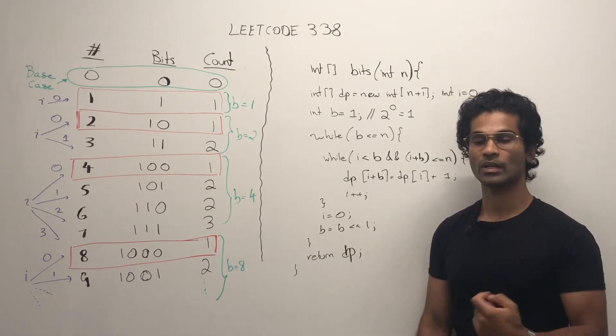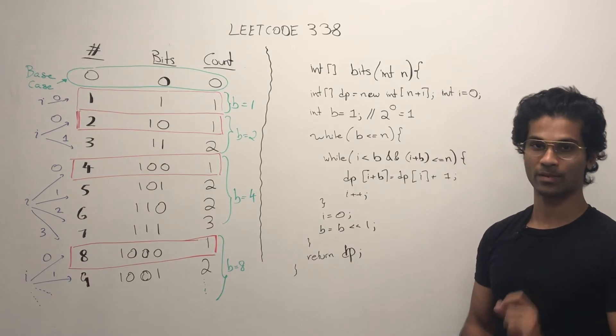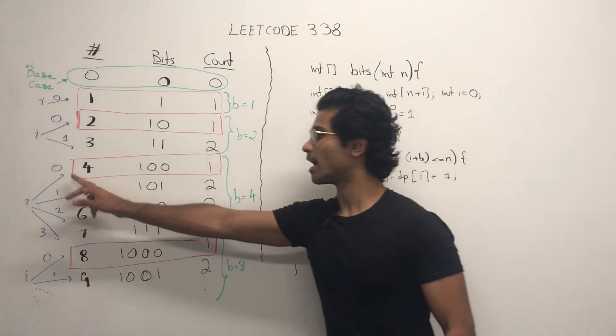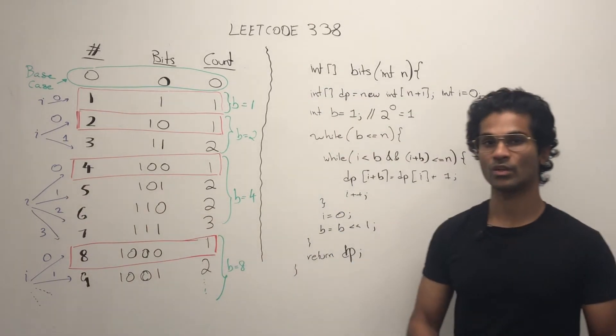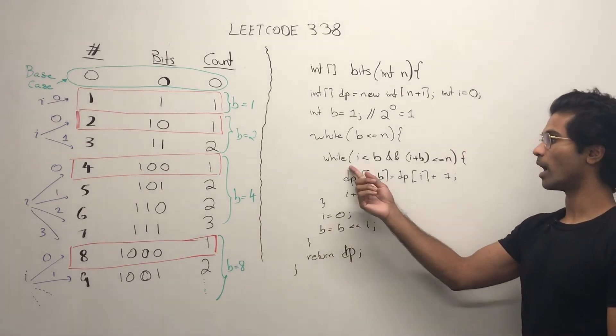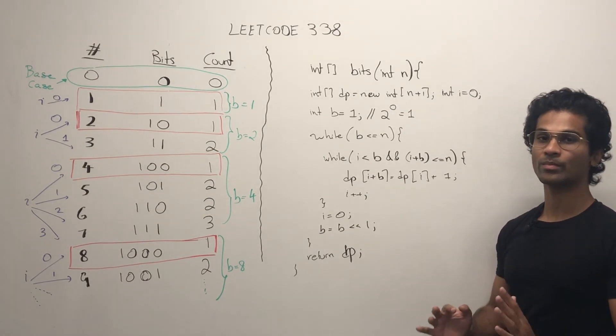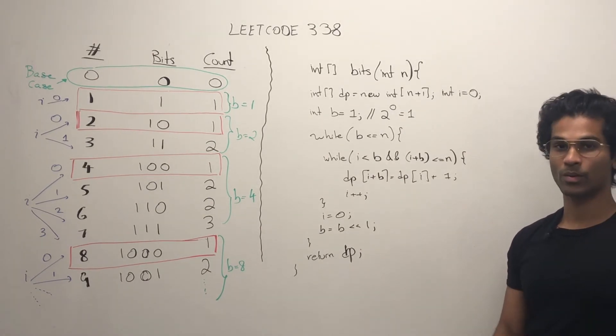Next, we note that we have an inner while loop where i is less than B. You'll note that this i pointer is always less than the value of that particular block. So that's where i minus B comes from. And of course, i plus B should never be greater than N.